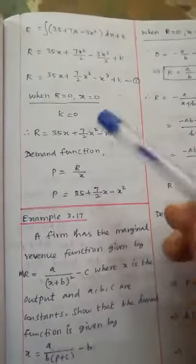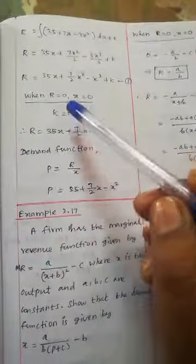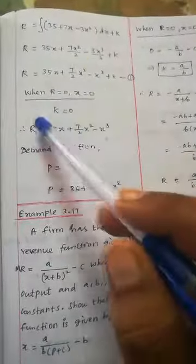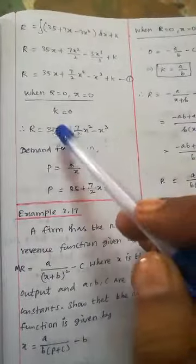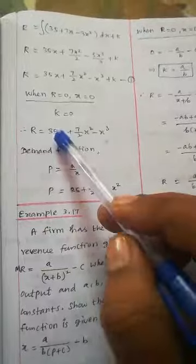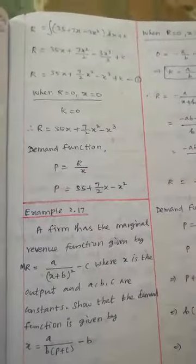If you want to get the fixed cost, find the k value. To get the demand function, p = R/x. So p = 35 + (7/2)x - x². Okay.